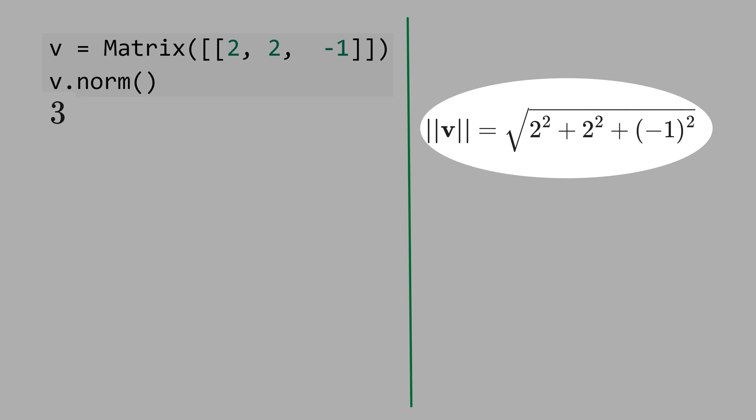This is the formula for the norm of v. You just square each component, sum up, and take the square root.